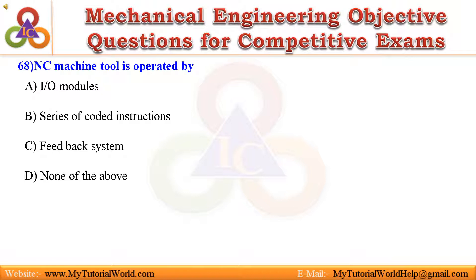68. In CNC machine tool is operated by: A. I/O modules, B. Series of coded instructions, C. Feedback system, D. None of the above. Answer is Series of coded instructions.